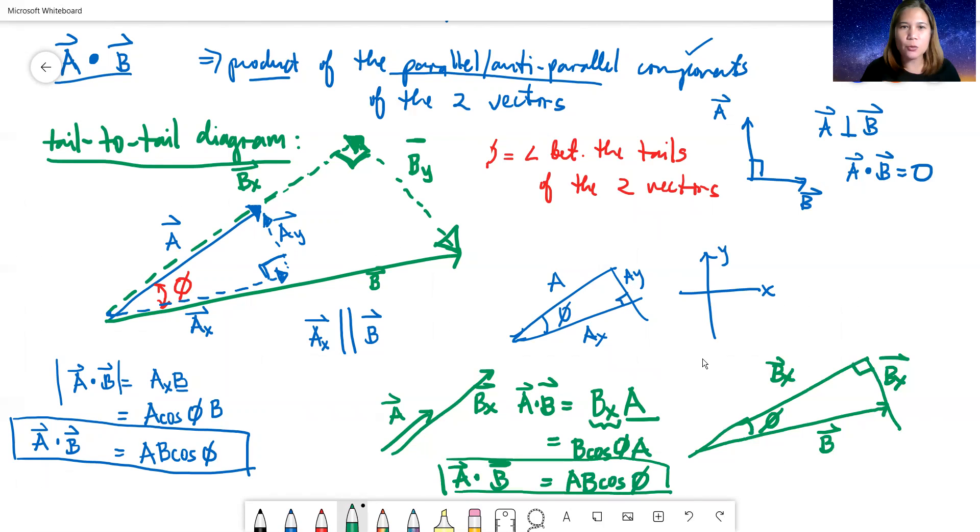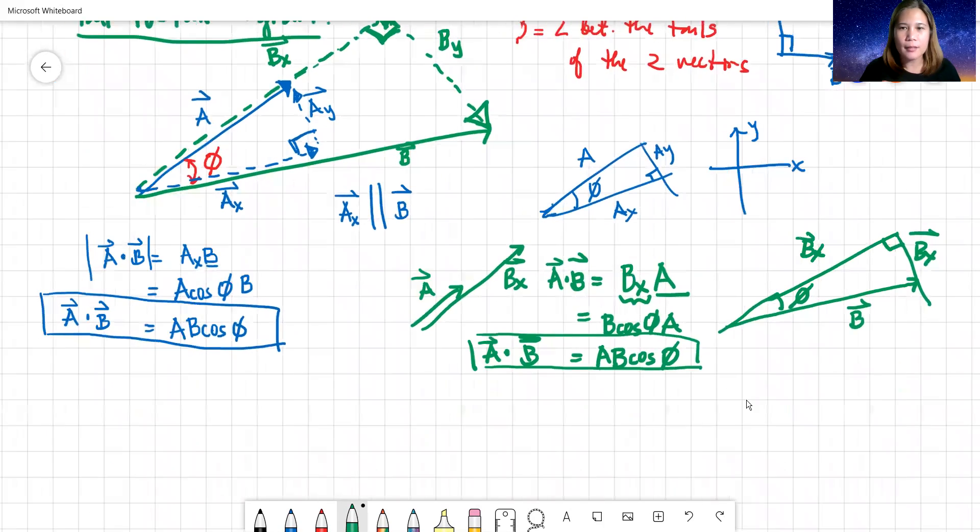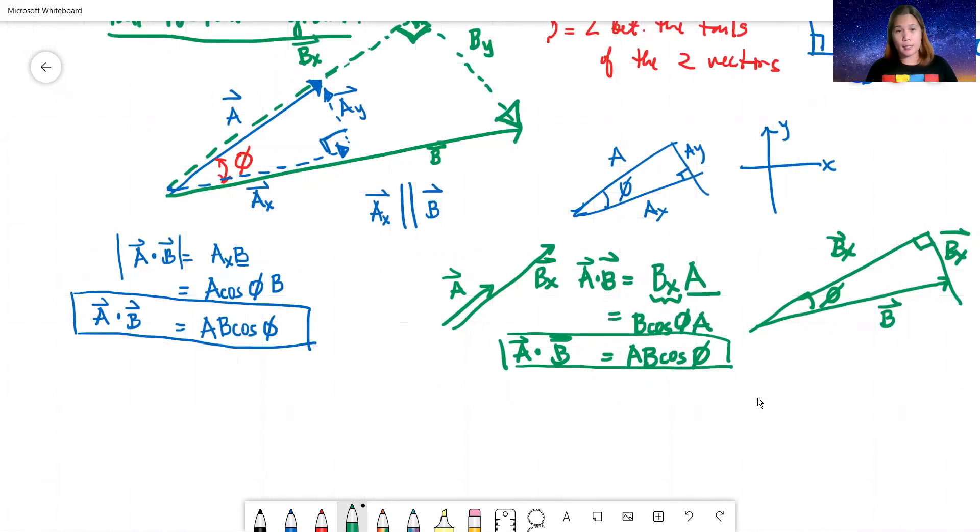That's how we have this definition of A dot B. And I hope you've read from the textbook that it's called scalar product because the parents are vectors, A and B are vectors, but the offspring, the anak, is scalar. So whatever is the answer here, this no longer has a direction, it only has magnitude, because it's a scalar quantity.